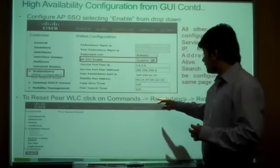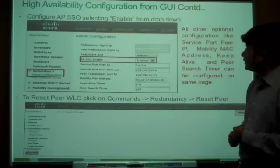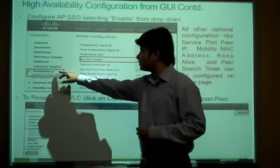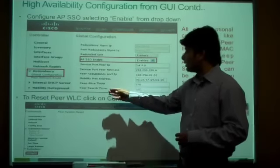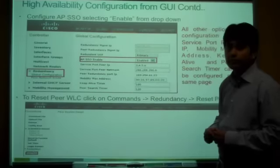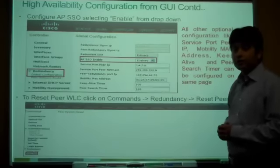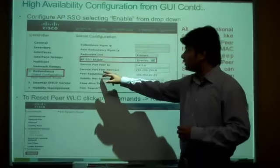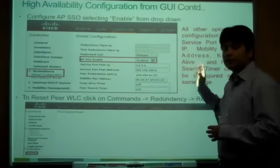Once done, the controller must be reset to bring up high availability. Once APSSO is up, on the same page under controller global configuration for redundancy, you can configure optional parameters such as keepalive timer, peer search timer, service port IP, and peer service port IP. Since you cannot configure anything on the standby controller once paired, you can configure the peer service port IP and mask from the active controller, and it automatically syncs via the redundant port.